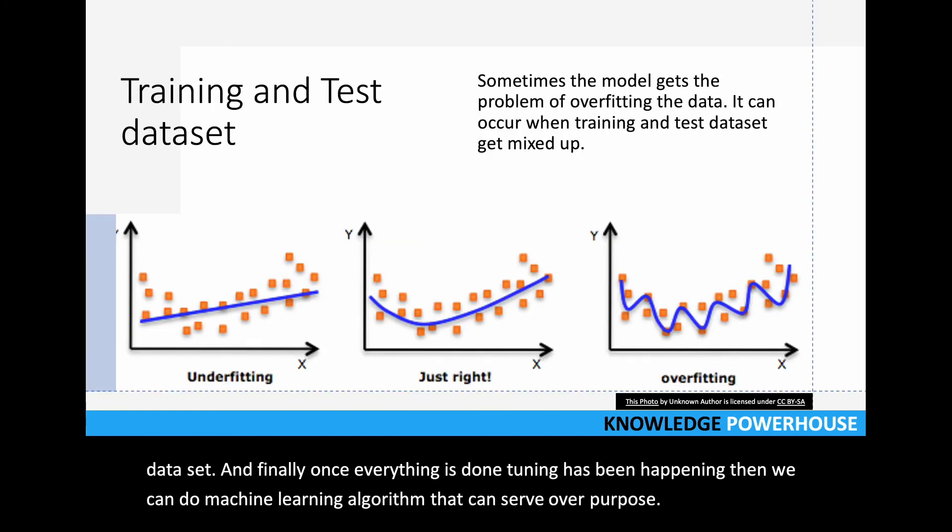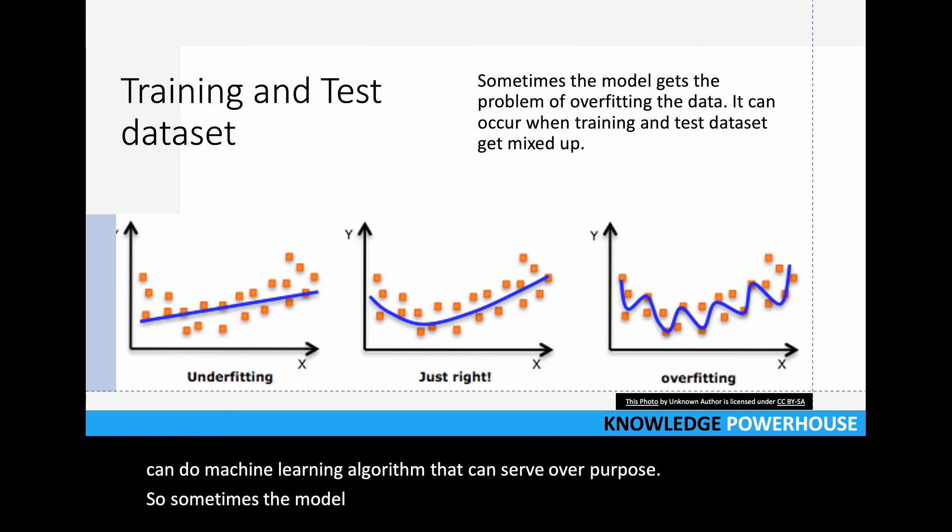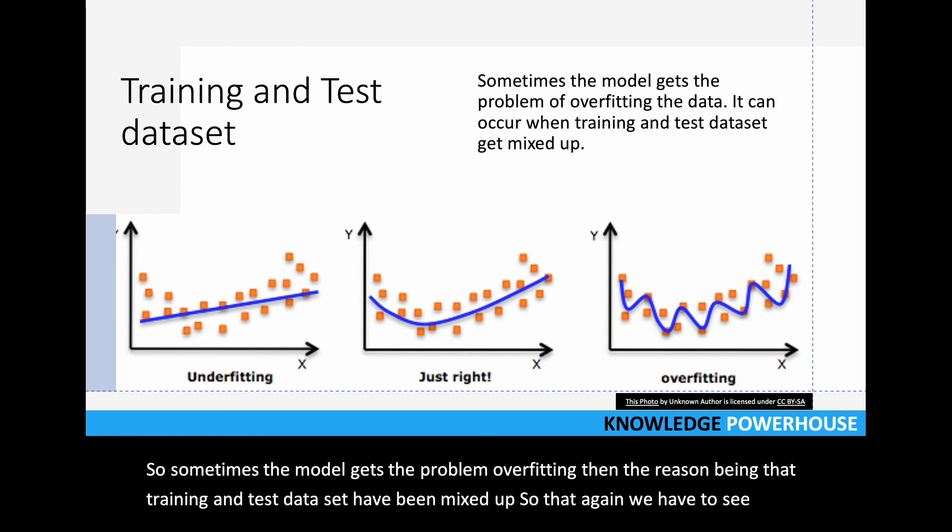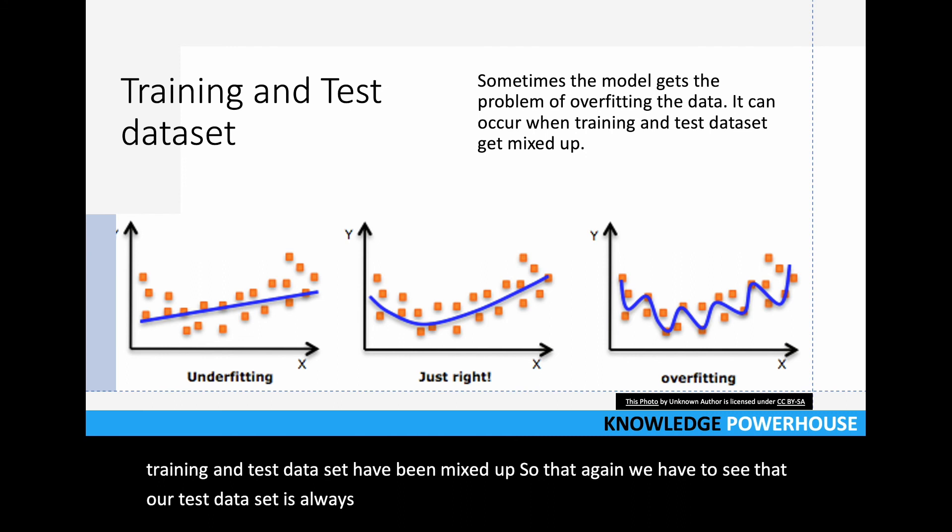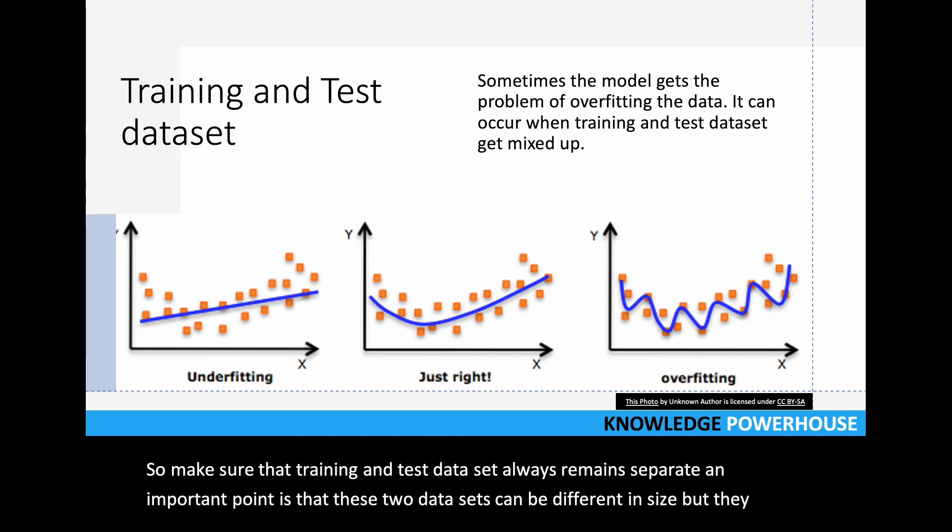Sometimes the model gets the problem of overfitting. The reason being that training and test datasets have been mixed up, so we have to see that our test dataset is always different. The model does not memorize the training dataset - if it memorizes, we'll get the overfitting problem. Make sure the training and test datasets always remain separate. An important point is that these two datasets can be different in size but they can actually provide very good tuning of our model.